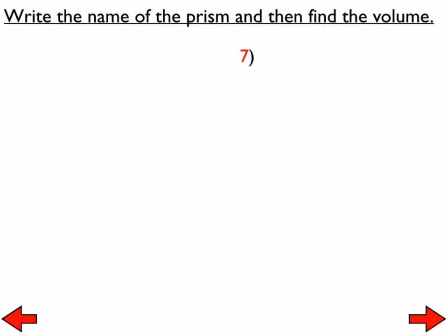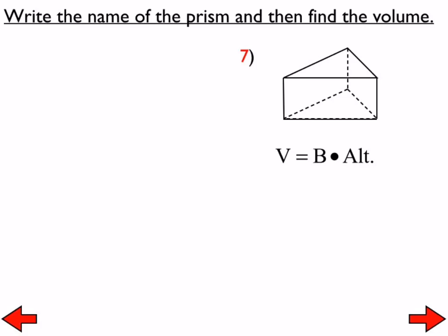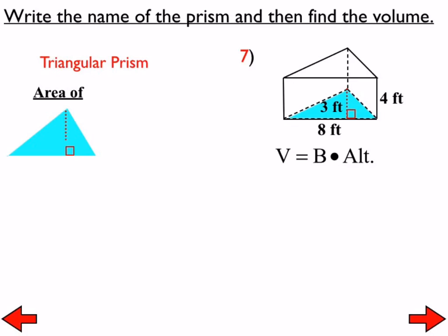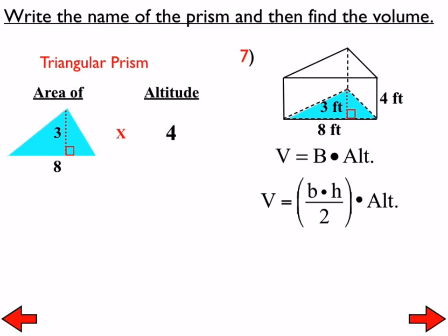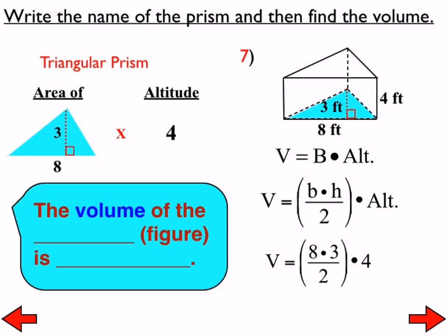Here is number 7. We have a triangular prism. The area of the triangle is 12, using the pieces of information given for that triangle. The altitude of the prism is 4, so we have 12 times 4, which equals 48 cubic feet.